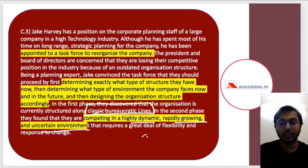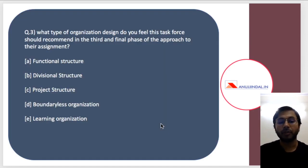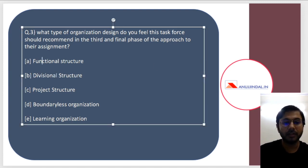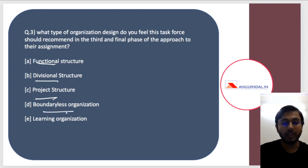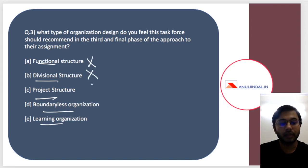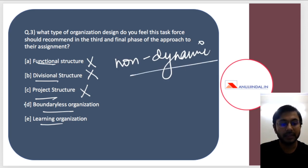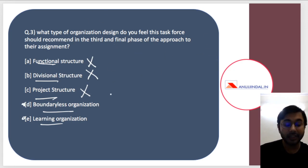The question is: what type of organization design should the task force recommend? The options are functional, divisional, project, boundaryless, and learning. Functional, divisional, and project structures can be easily eliminated because they are older structures used in non-dynamic environments that do not change much. Boundaryless and learning organizations are the two types created when the environment is dynamic and changing very fast.